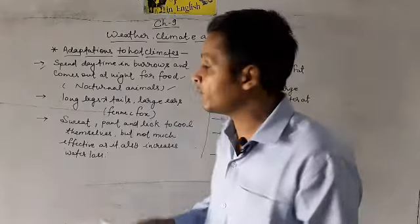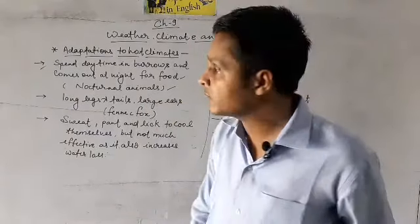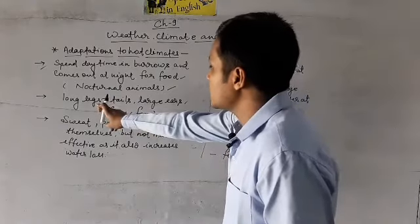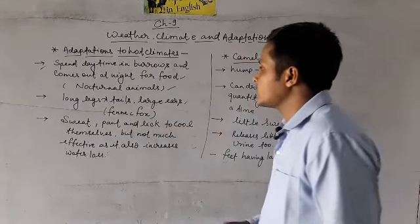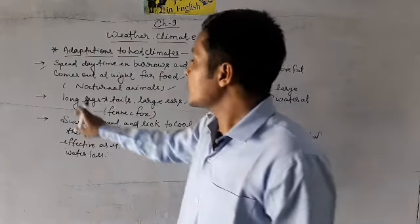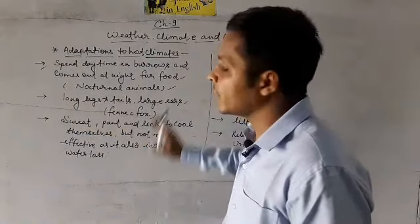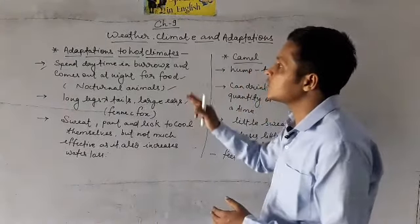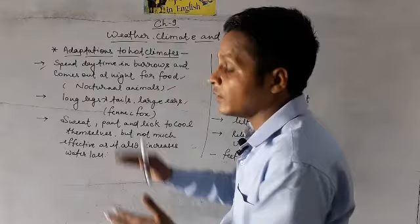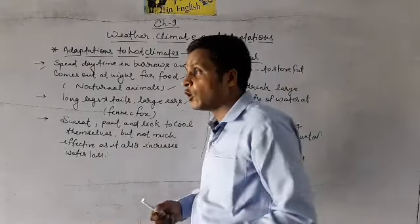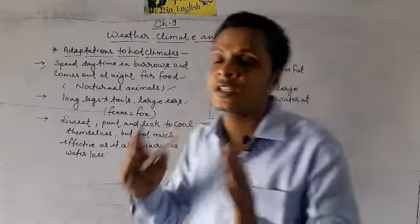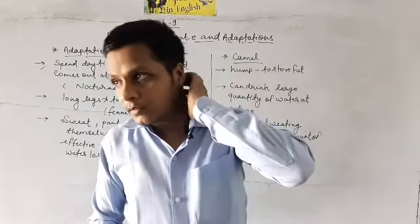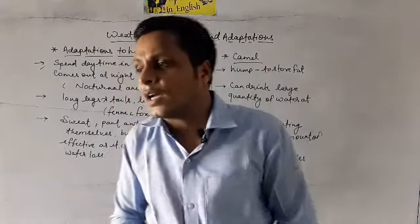Such animals are called nocturnal animals - aise animals ko hum log nocturnal animals kehte hain. Second thing kya hai yahan pe - long legs and tails and large ears. Aise animals jo hot climates mein pae jaate hain, unke legs bhi long hote hain, tails bhi long hote hain, aur large ears hote hain.